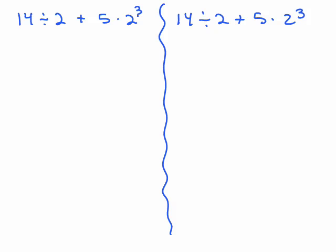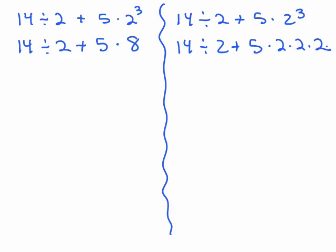All right, so if I do this 2 cubed here, one way is you copy up to that point and 2 cubed is 8. Somebody else may have just changed it to 2 times 2 times 2. Either way is fine.